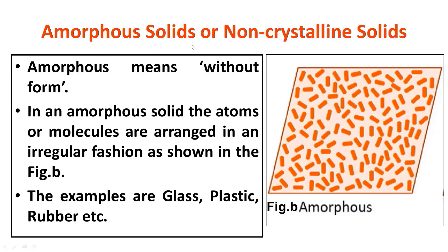Amorphous solids or non-crystalline solids are the second category. Amorphous means without form — it doesn't have any particular pattern inside. Atoms, ions or molecules are not arranged properly; instead they are spread in a haphazard, random manner. In an amorphous solid, the atoms or molecules are arranged in an irregular fashion, as shown in figure B. Examples are glass, plastic, rubber, etc.